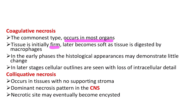The tissue is initially firm and later becomes soft, and is finally digested by macrophages. In the early phase, histological appearance may demonstrate little changes. In the later stage, cellular outlines are seen with loss of intercellular details. Liquefactive necrosis occurs in tissue with no supportive stroma, and is the dominant necrosis type in the CNS.